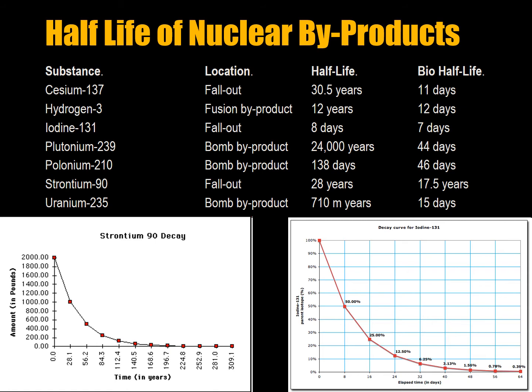Plutonium-239: about 90-95% of the warhead probably won't detonate. It lasts 24,000 years as a half-life, though it creates other isotopes very quickly and is a warhead you have to swap out and replace frequently. The bio-half-life is 44 days. Polonium-210 has been used for assassinations by the Russian government in the last two decades. It's a bomb by-product with a 138-day half-life and 46-day bio-half-life.